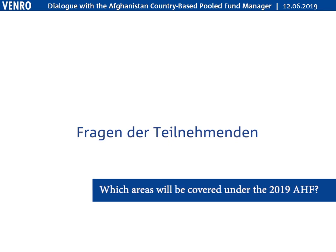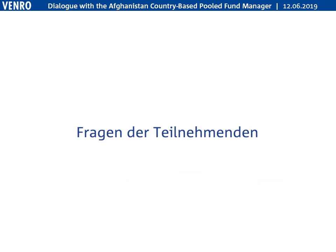An upcoming allocation could be a standard allocation — a more comprehensive process happening at least once per year — or a specific reserve allocation, meaning an emergency disbursement of a somewhat smaller amount for a specific urgent reason.